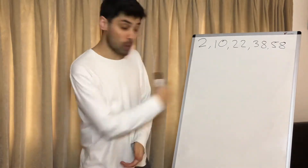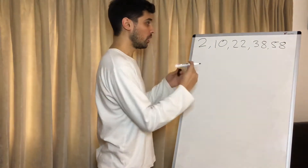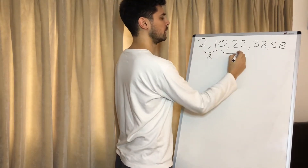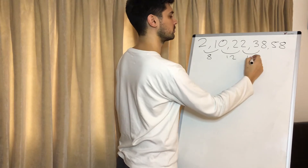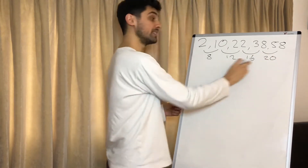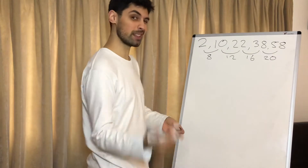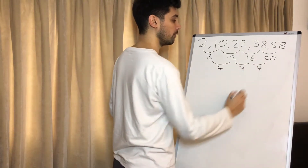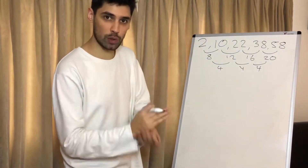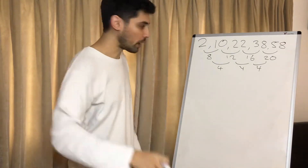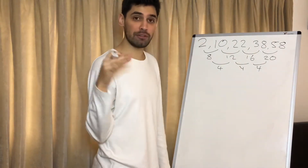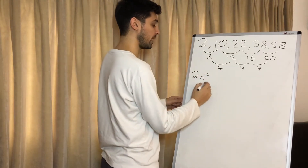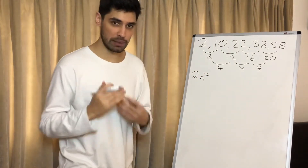Alright, let's go for another one because repetition is key. Like with all sequences, let's find the difference between the terms. So we've got 8, 12, 16, and 20 — all different differences. So let's find the second difference: 4, 4, 4. Our double difference is the same, so we know it's a quadratic. We're going to half this number and that's going to be the value of our n squared — so we are going to have 2n squared.